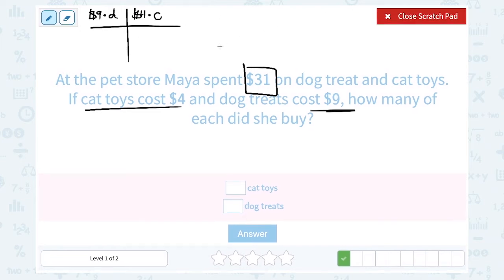You might want to just start with, let's say we start with two and two. And then we can just adjust and see if we need to go a little higher or a little lower from there. So if she bought two dog treats at $9 each, that would be two times nine. And then she also bought two cat toys at $4 each, that would be two times four. Two times nine is 18 and two times four is eight. So if we add that up, 18 plus eight, we get $26.